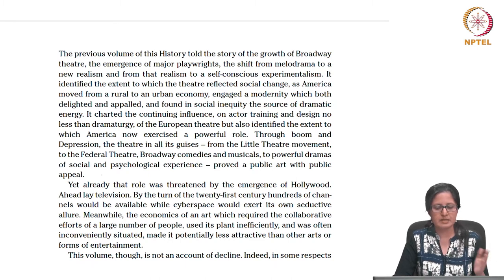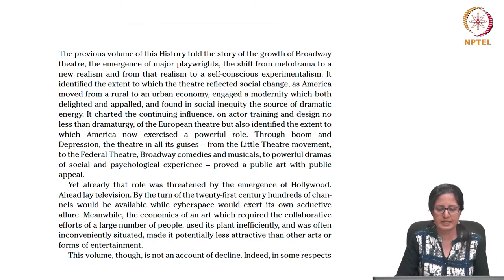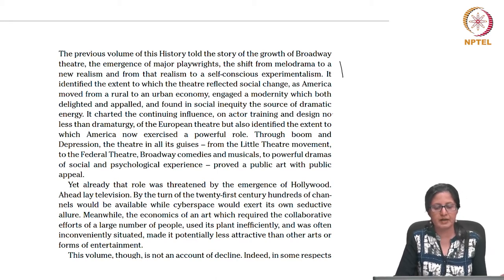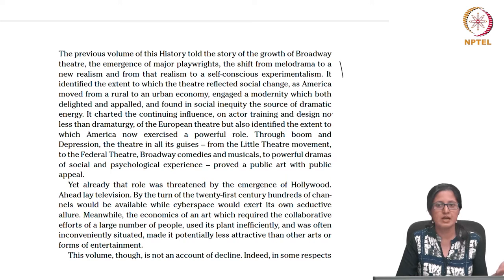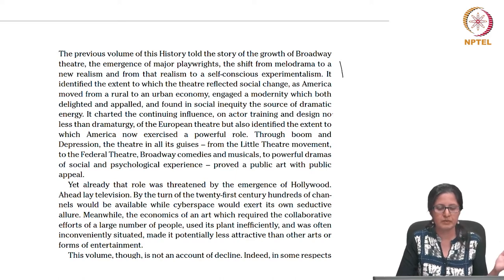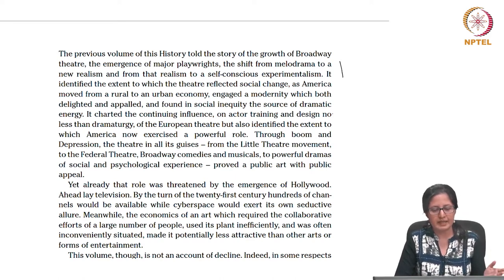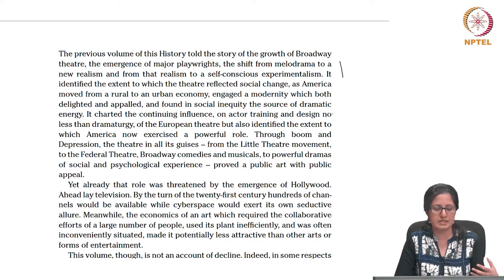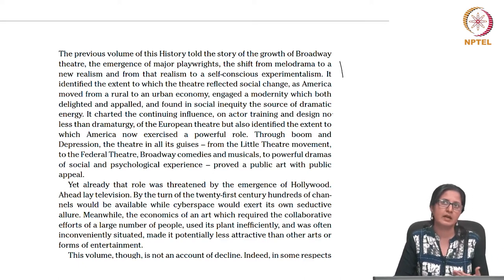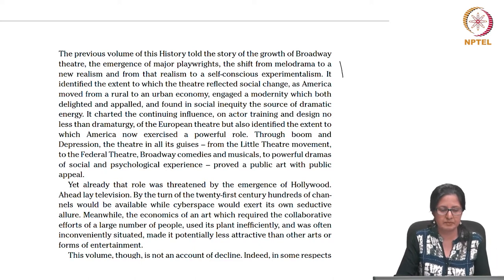The previous volumes have been telling us the story of the emergence of Broadway theater, the emergence of major playwrights, a shift from melodrama to new realism and from that realism to a self-conscious experimentalism. From the first play we looked at, Eugene O'Neill's The Emperor Jones, we find a shift towards realism and a departure from realism, all set in the context of contemporary America. It identified the extent to which theater reflected social change.